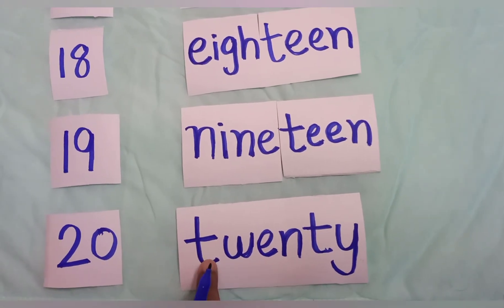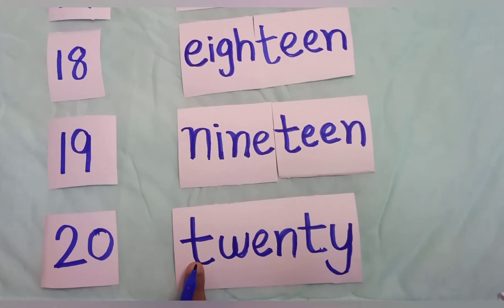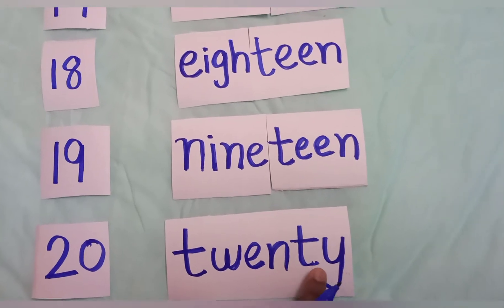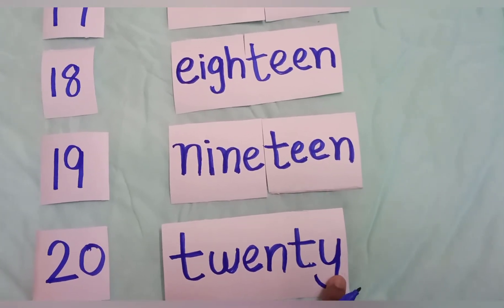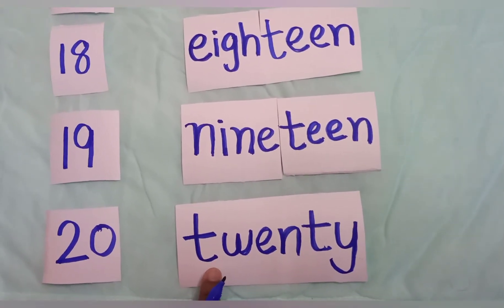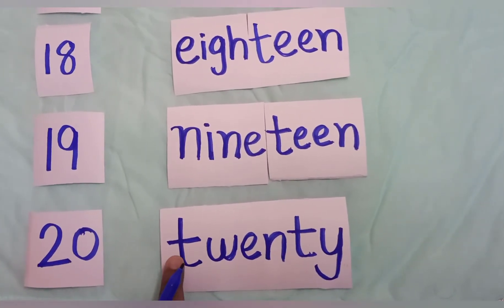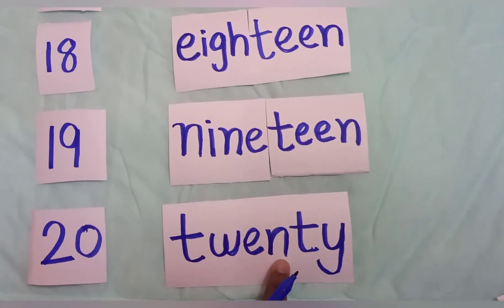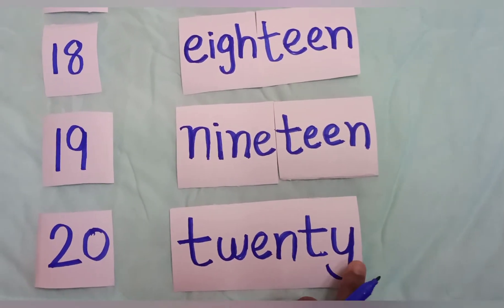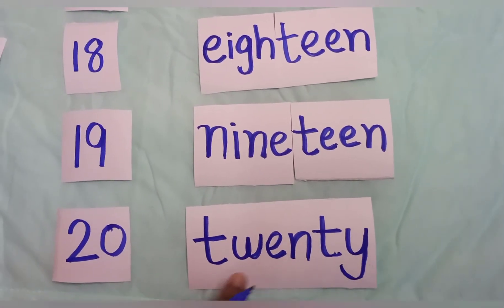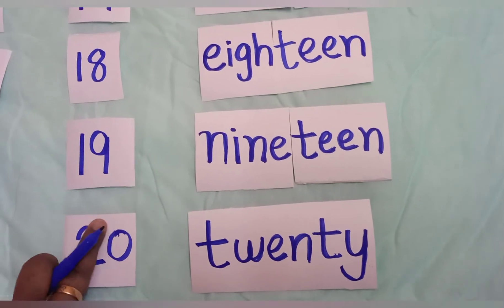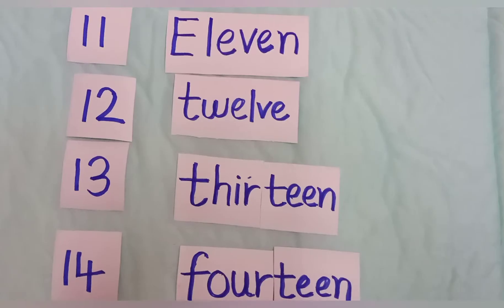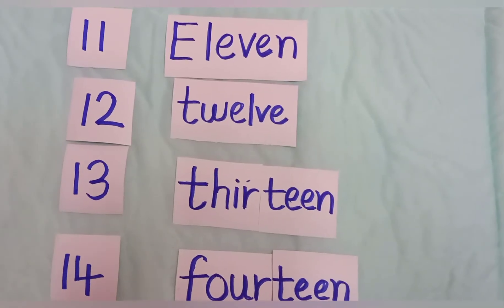The last one is 20. The spelling of 20 is very easy — T-W-E-N-T-Y, twenty. We write 20 as 2 and then 0.